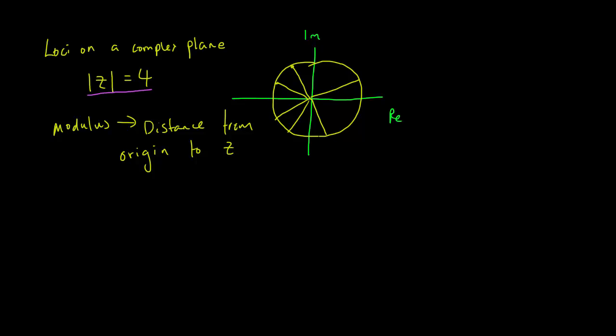So how do we find this geometric interpretation? What we must do is that we have to put Z equals X plus YI. Now, don't be confused. This X and Y is not the one that you usually work with.